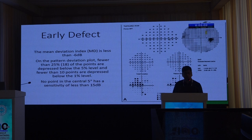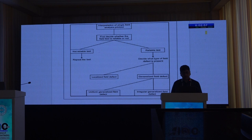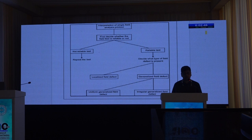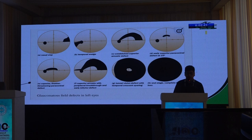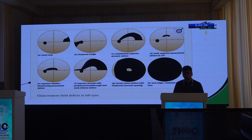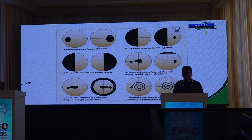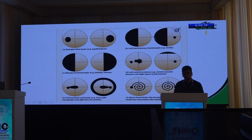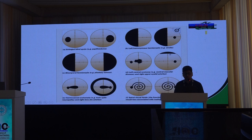We must rule out other ocular causes of field defects. Categorize fields as early, moderate, or severe. First assess reliability, then categorize into localized or generalized. Common glaucoma defect patterns include nasal step, temporal wedge defect, superior or inferior arcuate defects, and paracentral scotomas; advanced cases may show tunnel vision or complete loss. Non-glaucomatous patterns include enlarged blind spot in papilledema, homonymous hemianopia in stroke, bitemporal hemianopia in pituitary tumor, and superior defects from eyelid ptosis.